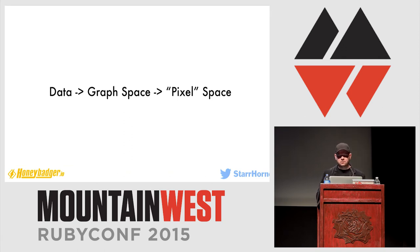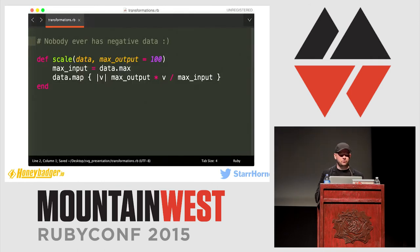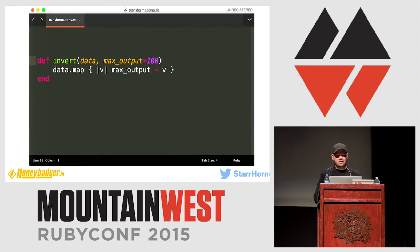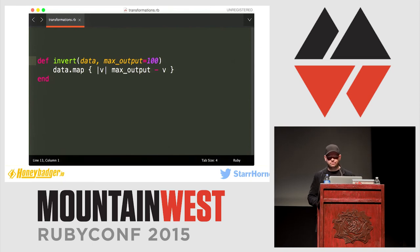I found generally that pretty much all the math boils down to a scale function, where I map my data into a space of one to 100% or something. And an invert function to just take care of the fact that SVG starts drawing at the top left of the screen.